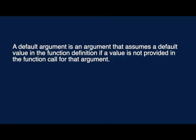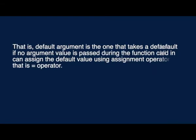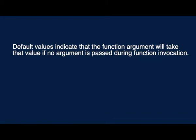Shall we see about default arguments? A default argument is an argument that assumes a default value in the function definition if a value is not provided in the function call. That is, a default argument takes a default value if no argument value is passed during the function call. You can assign the default value using the assignment operator — the equal to operator. Default values indicate that the function argument will take that value if no argument is passed during function invocation.